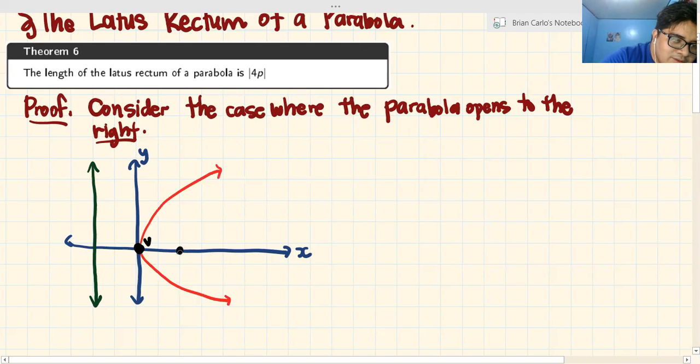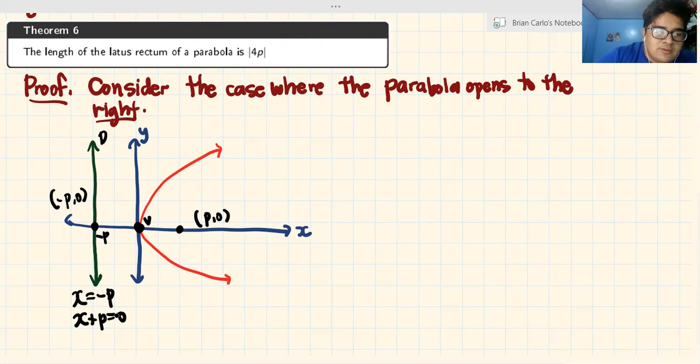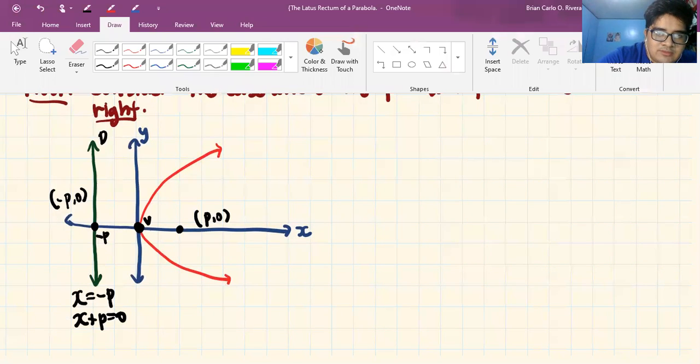And let's have the directrix. The directrix is outside. This is the directrix. We're just drawing the components of the parabola. This is the vertex V. Let's say this is the point, I don't know, this is (p, 0). Because it's always like that, right? This point is (-p, 0). And this directrix has the equation x = -p, or the line is x + p = 0.